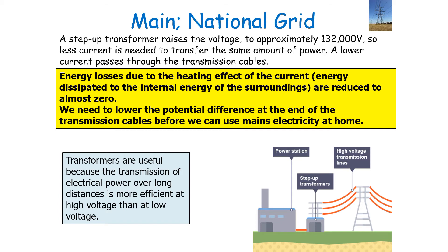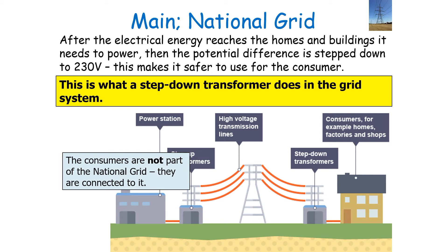At the end of the transmission cables, the electrical energy reaches homes, schools, shops, and factories. The potential difference is then stepped down to 230 volts, making it safer to use for the consumer, which is what the step-down transformer does in our national grid.